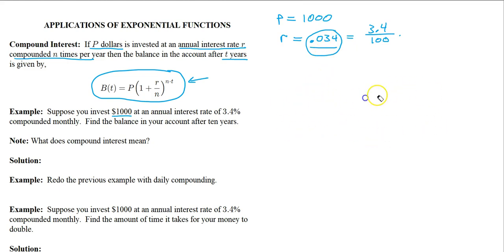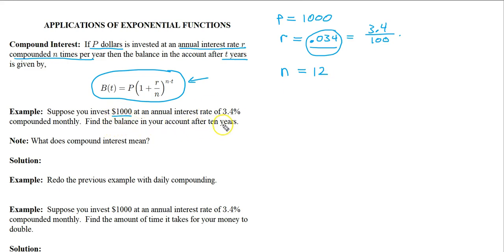Now what is n and t? The n is the number of compoundings per year. This account is compounded monthly, so n is 12. We want the balance after 10 years, so t is 10.